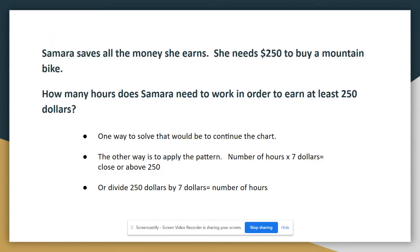Samara saves all her money that she earns. She needs $250 to buy a mountain bike. How many hours does Samara need to work in order to earn at least $250? Now this question, you're not going to get an answer of $250. I need you to get an answer that's just slightly higher, not a lot higher.